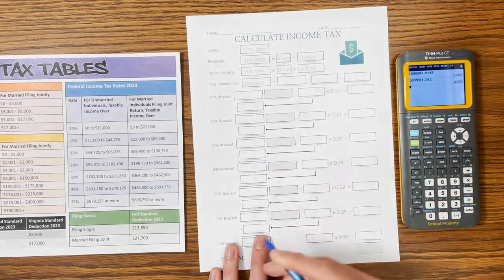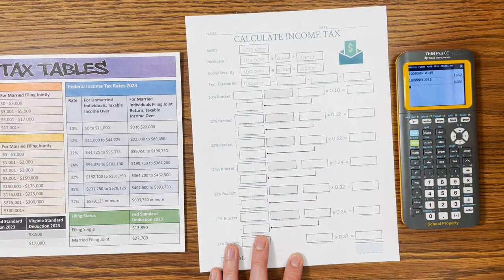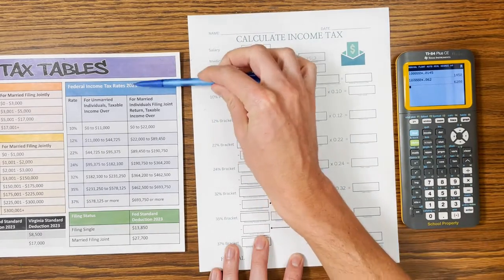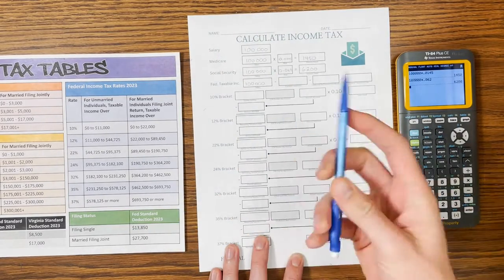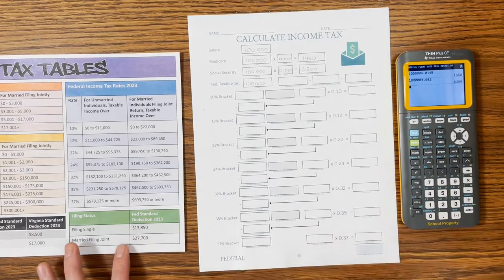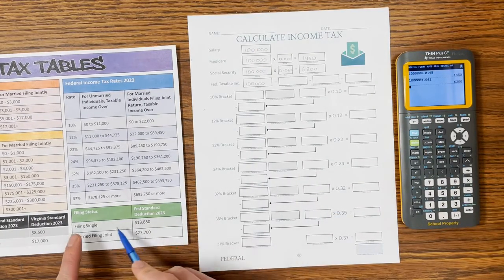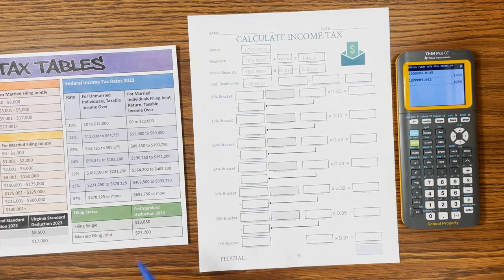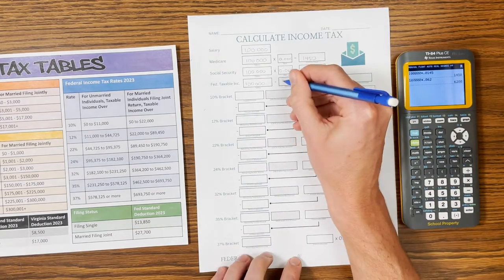So $100,000, our standard deduction for 2023, if you look at your tax tables, which you can find with this Calculate Net Income Resource, for 2023 a single person, which is what I'm going to pretend to be in this case, is $13,850.